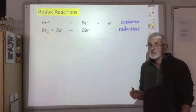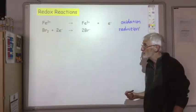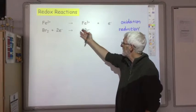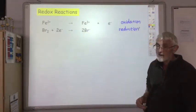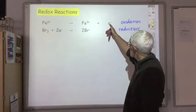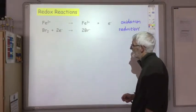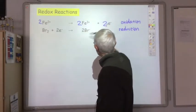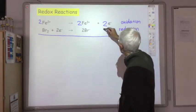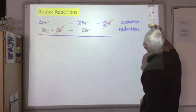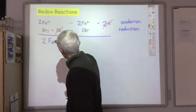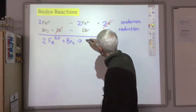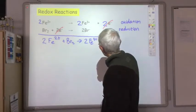To write the balanced redox equation, remember that no electrons should appear in the final equation. The electrons appear in the individual ion-electron equations, but when you combine them, the electrons should cancel out. I have one electron on the right-hand side and two on the left, so I multiply the top equation by 2. The electrons cancel, leaving the balanced redox equation: 2Fe2+ + Br2 → 2Fe3+ + 2Br−.